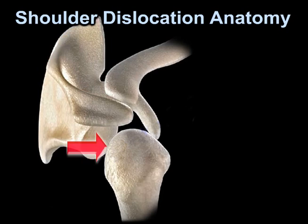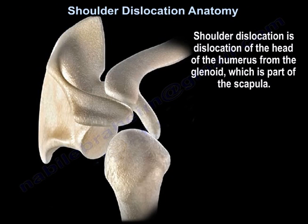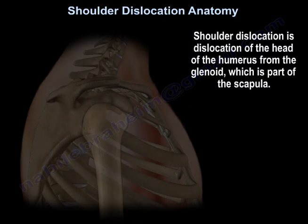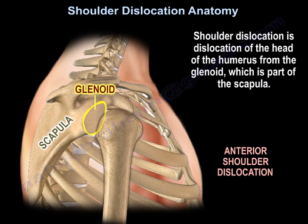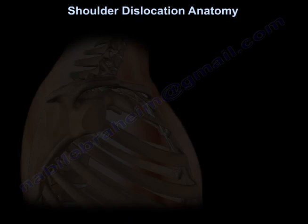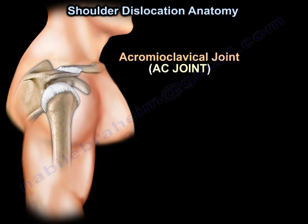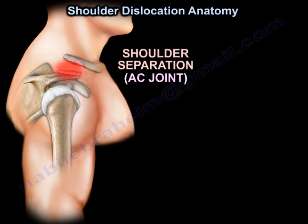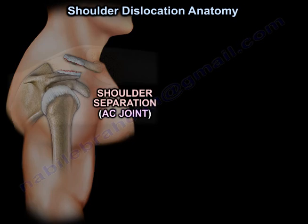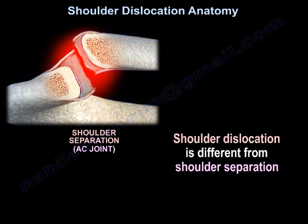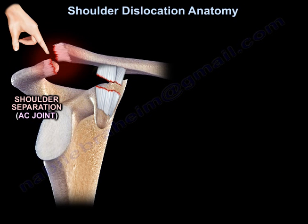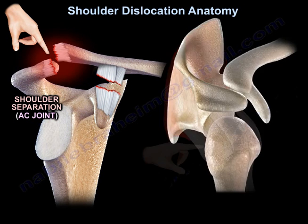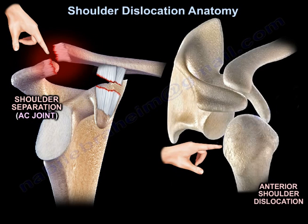Shoulder dislocation is dislocation of the head of the humerus from the glenoid, which is a part of the scapula. The acromioclavicular joint is called the AC joint. When it is injured, they call it shoulder separation. Shoulder dislocation is different than shoulder separation. Here you can see the shoulder separation on the left and the shoulder dislocation on the right.